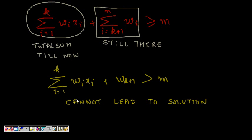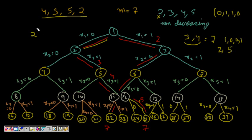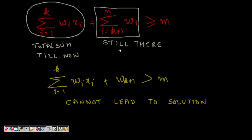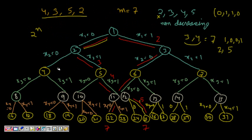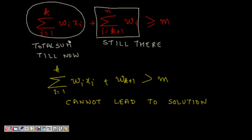Since there are 2^n possibilities, we want to be more efficient as algorithmists. We try to determine early whether any solution can be found by going further down a branch. If we know no solution exists in a subtree, we stop branching there and look at other parts of the search space — this is the pruning strategy.